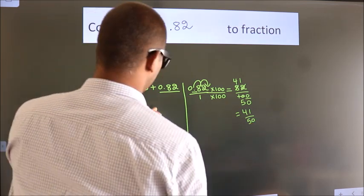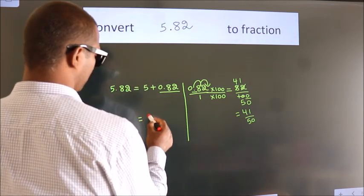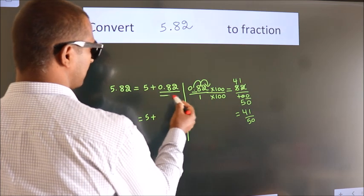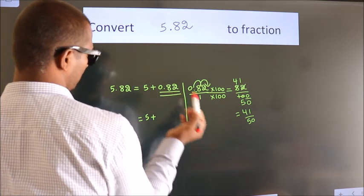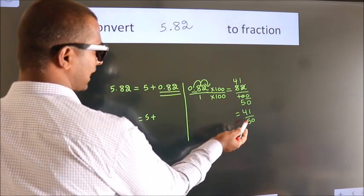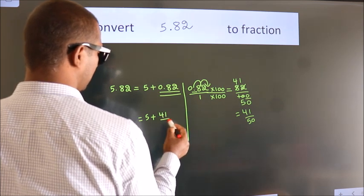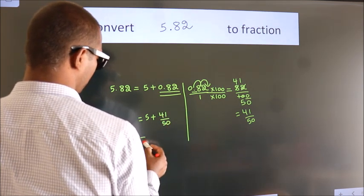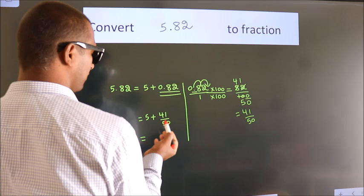Now here, 5 plus in place of 0.82, now we write this fraction 41 by 50. 5 plus 41 by 50.